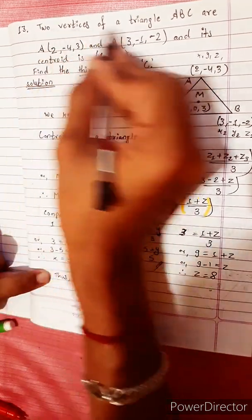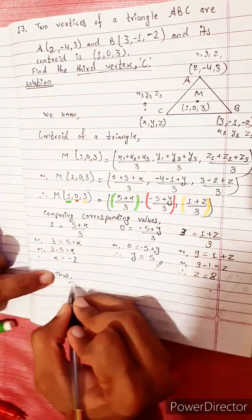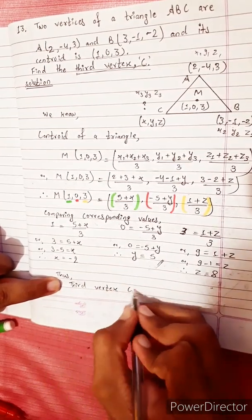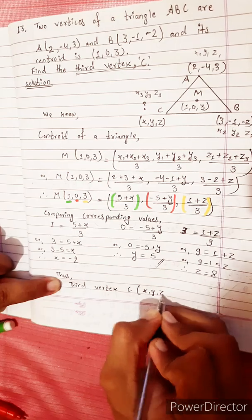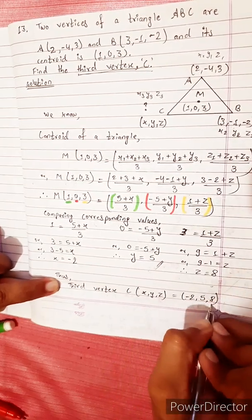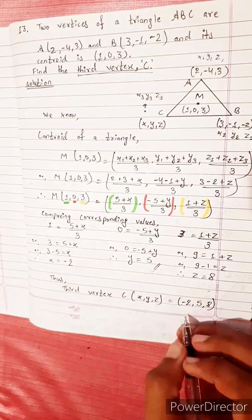Therefore, the third vertex C is (x, y, z) equals (-2, 5, 8). Let's check the answer - and that's the right answer.